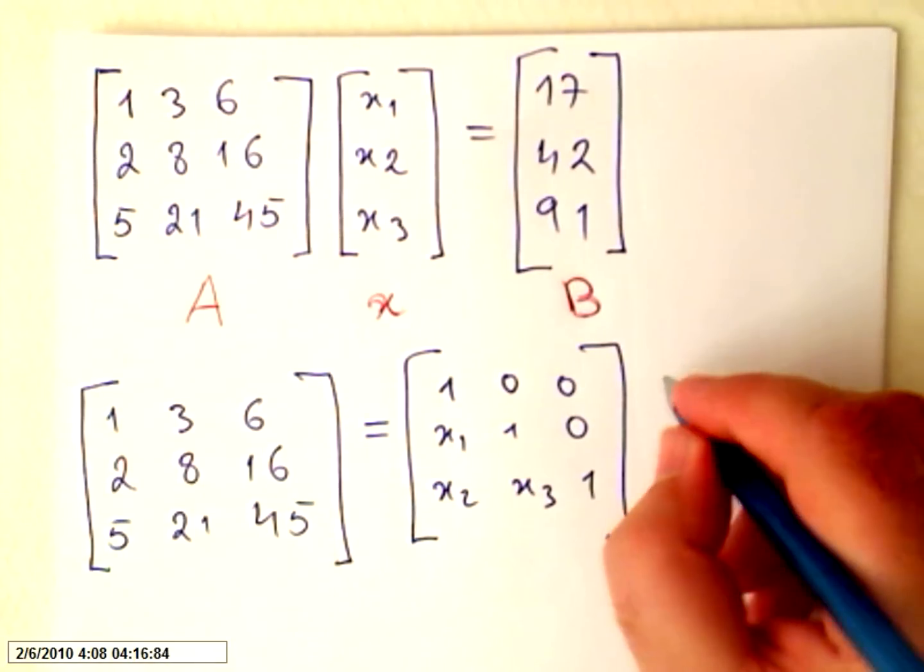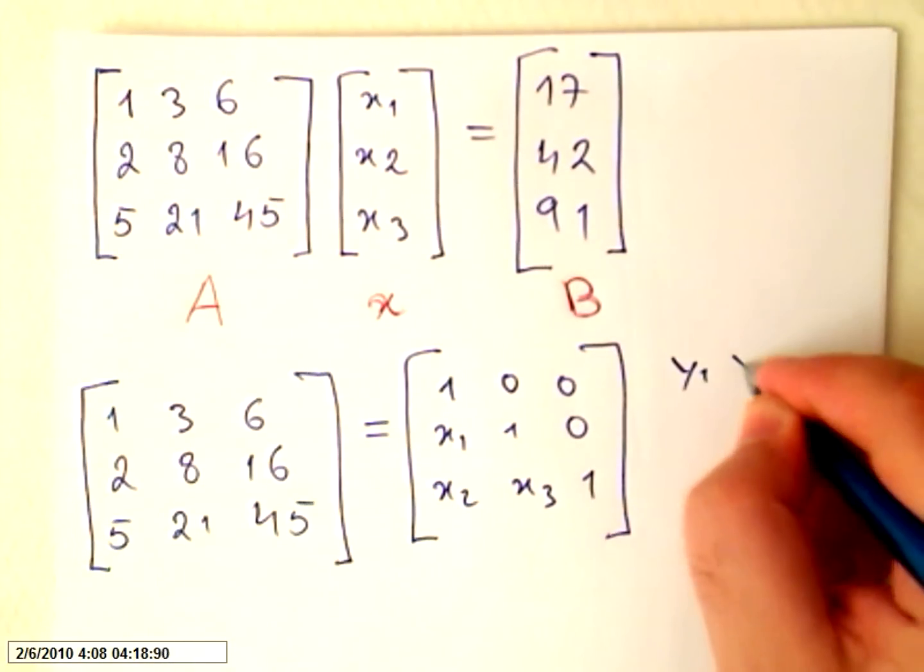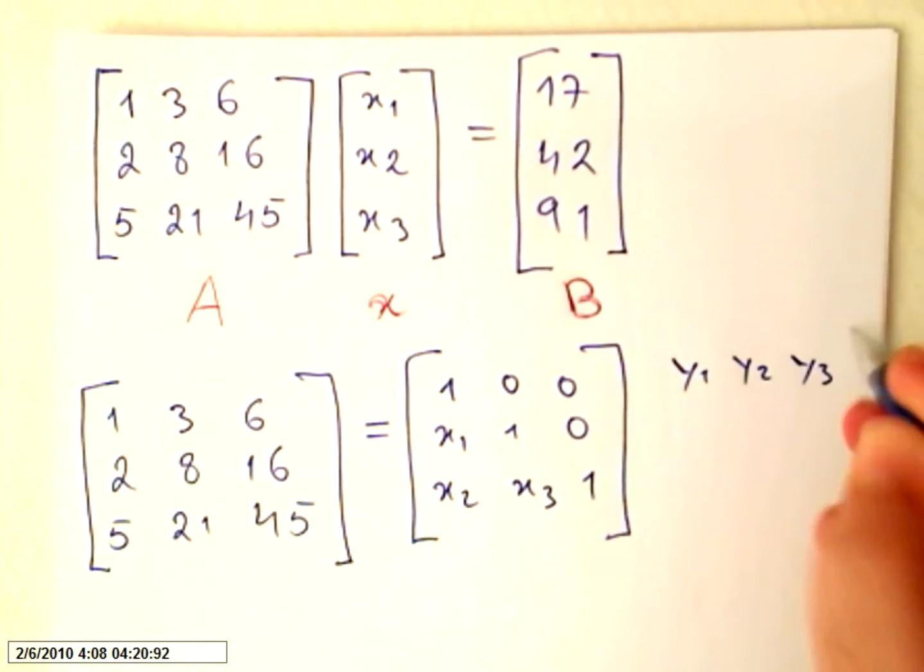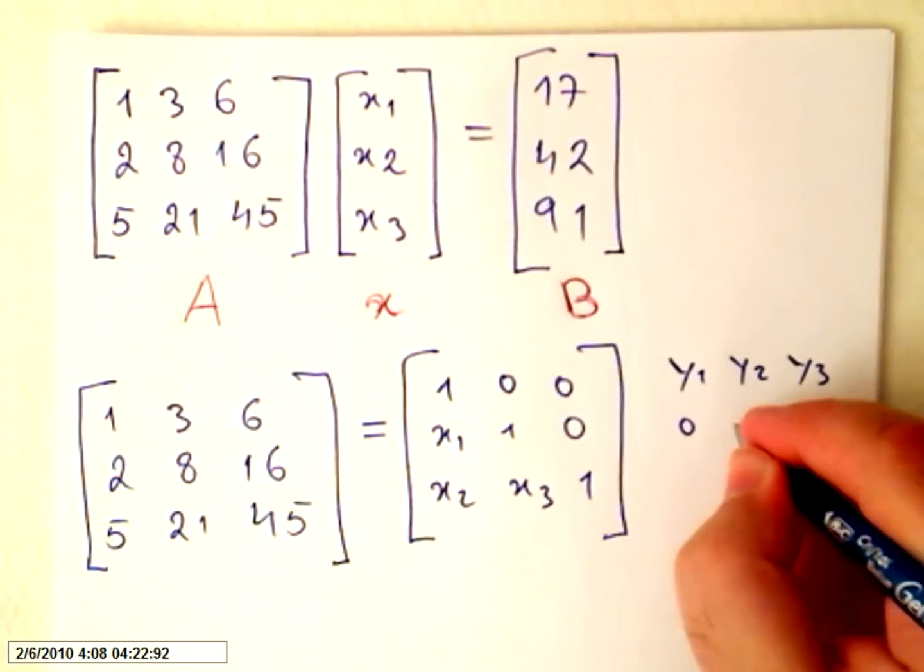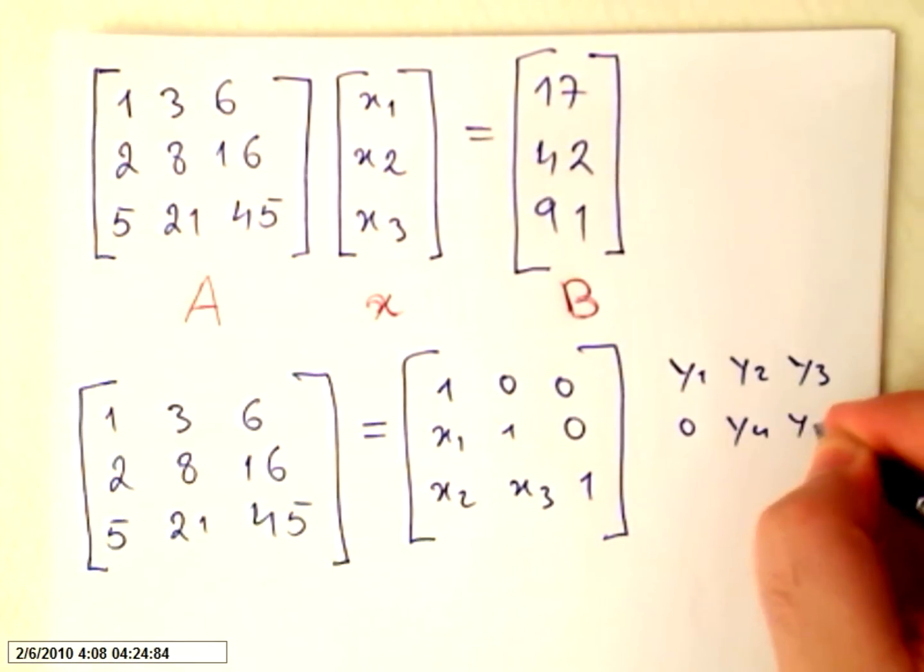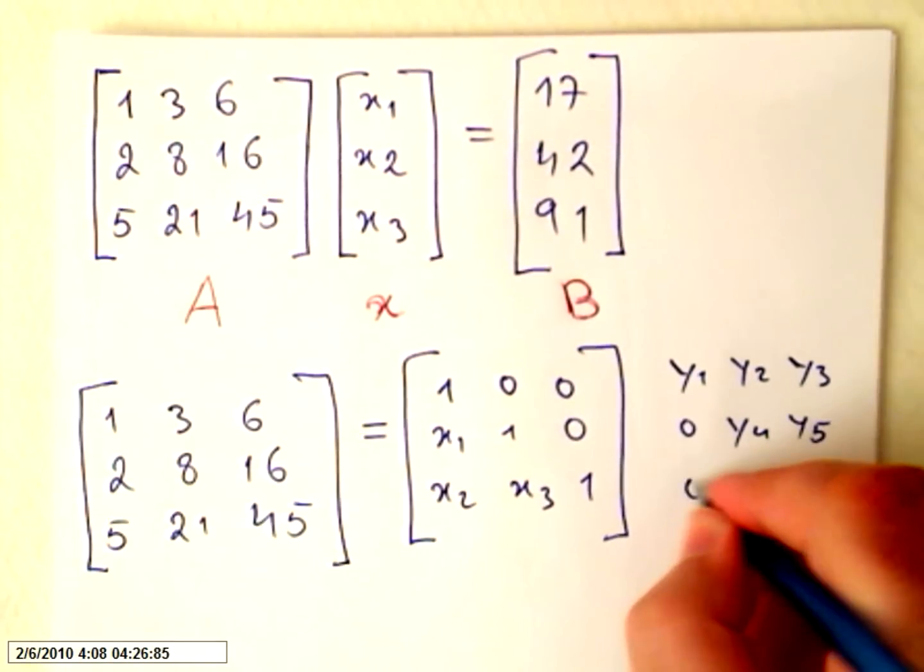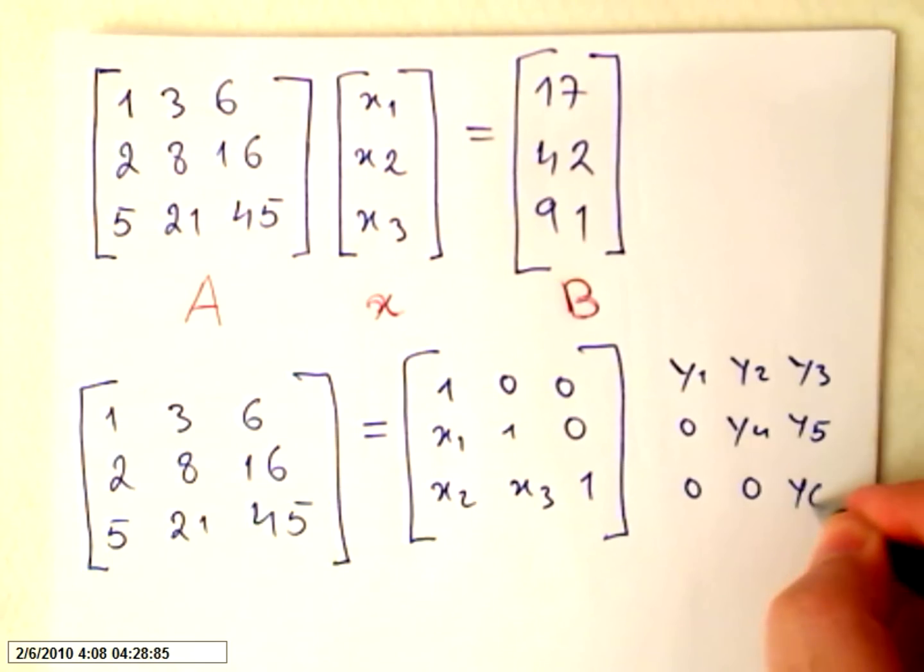Times an upper one with new variables, y1, y2, y3, 0, y4, y5, 0, 0, y6.